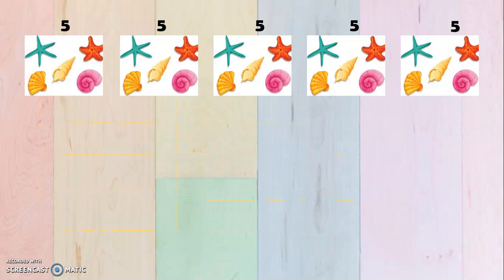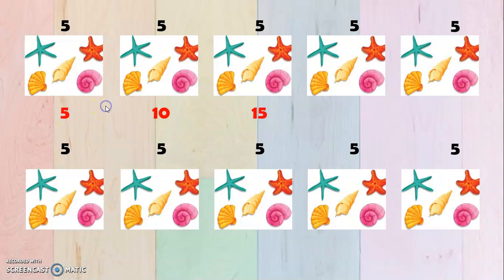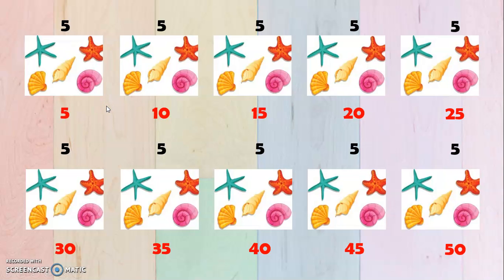Now we have here seashells, and they are in groups of 5. So we may start with 5, 10, 15, 20, 25, 30, 35, 40, 45, and 50.